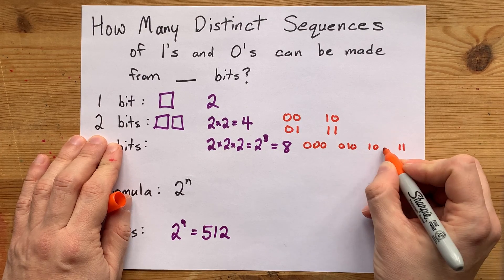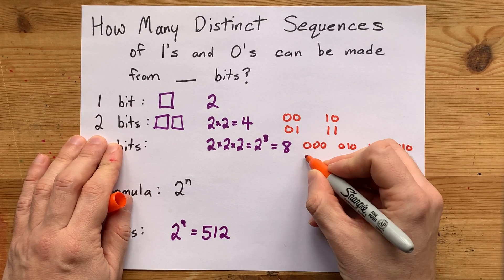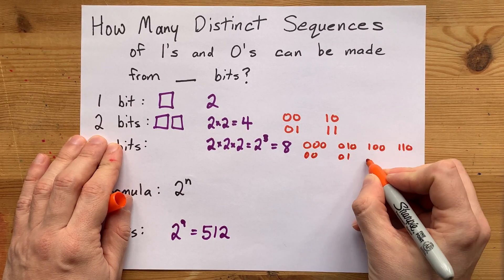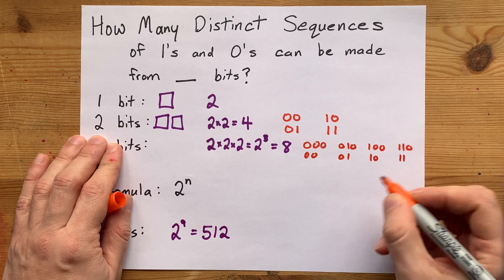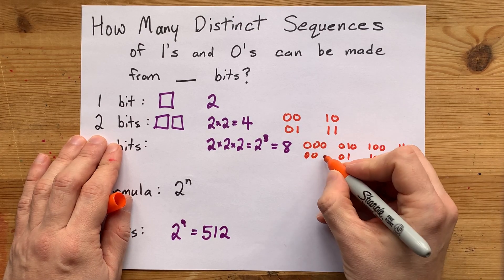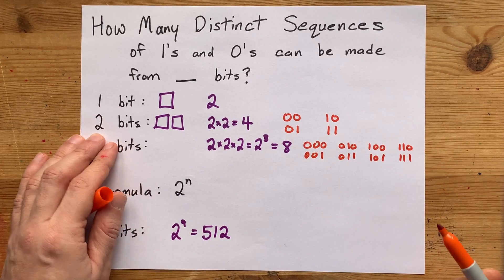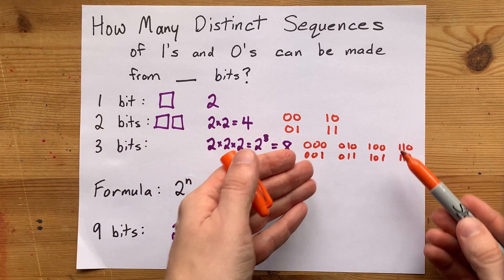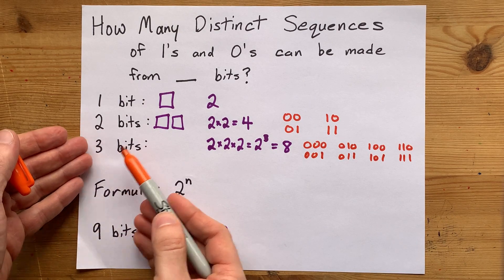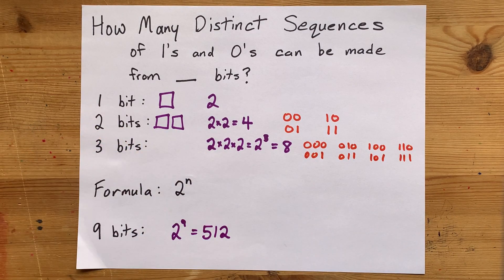And that third bit could be 0 like this, or - and I'm just copying out those same sequences of two bits - that third bit could be 1. And so now we have all eight options that you can make from a three-bit sequence.